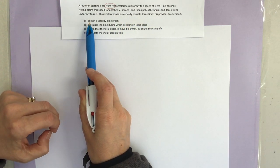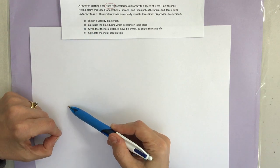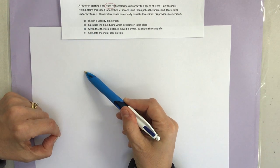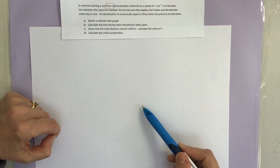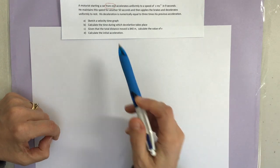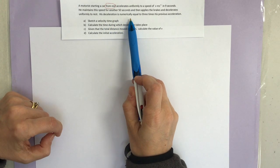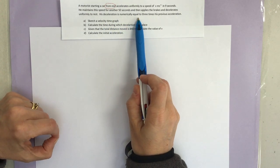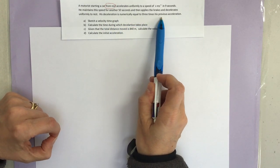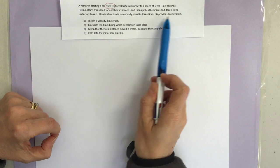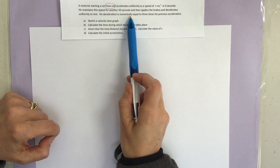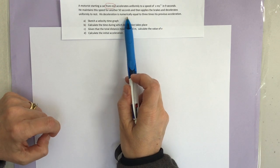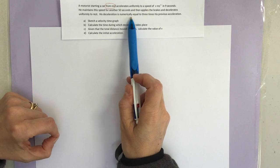So it's going to be that three-part motion again: acceleration, constant velocity, deceleration. It tells us here that the deceleration is numerically equal to three times the previous acceleration. We'll come back to why it says numerically equal, not just equal, in a second.